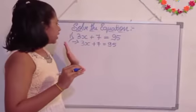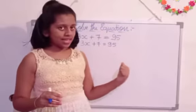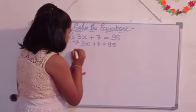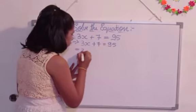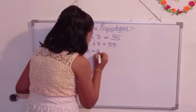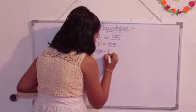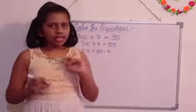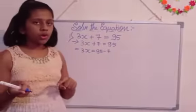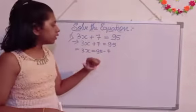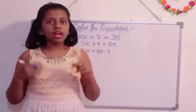Got it? So here we have wrote the question as it is. Now let's solve it. So first we are going to write 3x is equal to 95 minus 7. Here I wrote 3x is equal to 95 minus 7. Have you got? You are thinking that here 3x plus 7 is there. Here I wrote 95 minus 7. How it came?